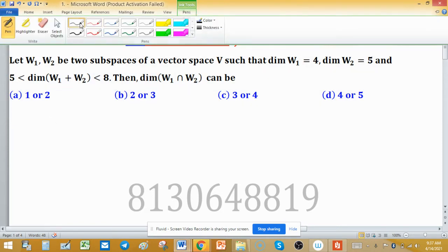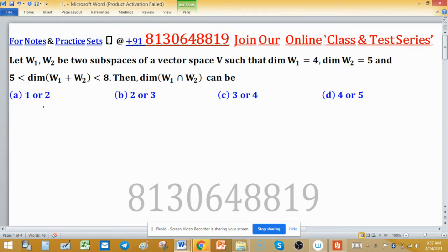Here, options have two dimensions, means possibility of intersection dimension. For example: 1 or 2, 2 or 3, 3 or 4, 4 or 5. Which one option is correct, we need to tell you.